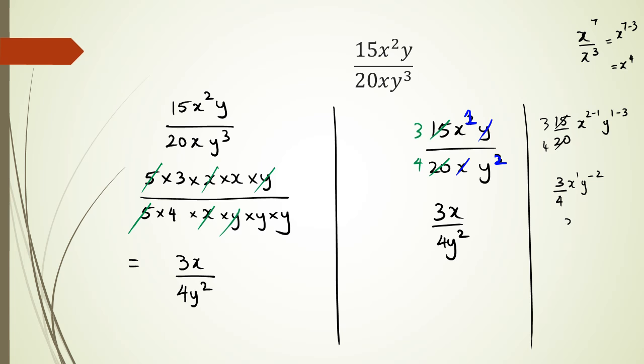And of course, rewriting that, you get 3x over 4y squared. Just another way of doing it as well. Cool. That's it for this session, guys. Any questions, pop it in the comments. And once again, thank you for watching.